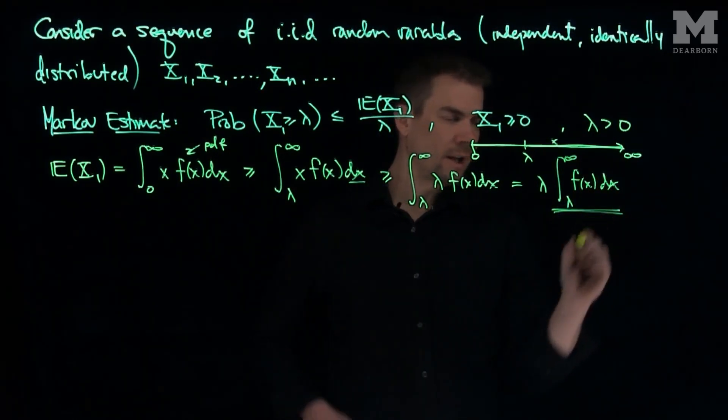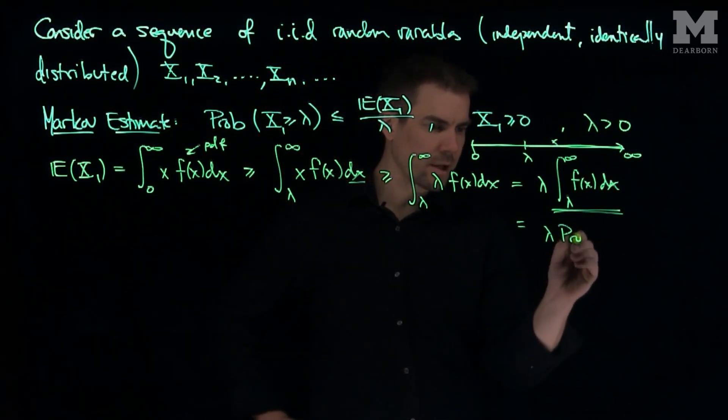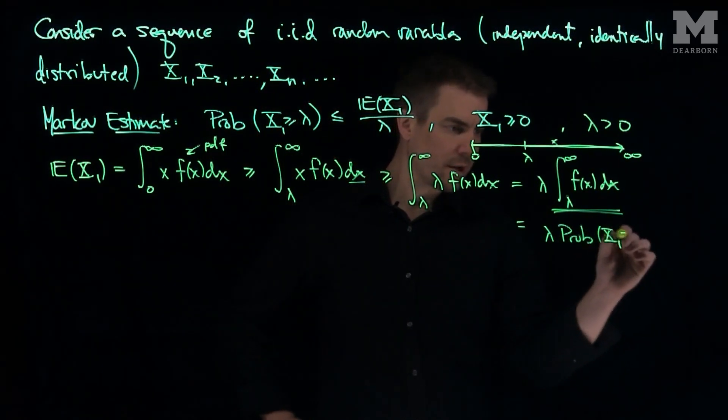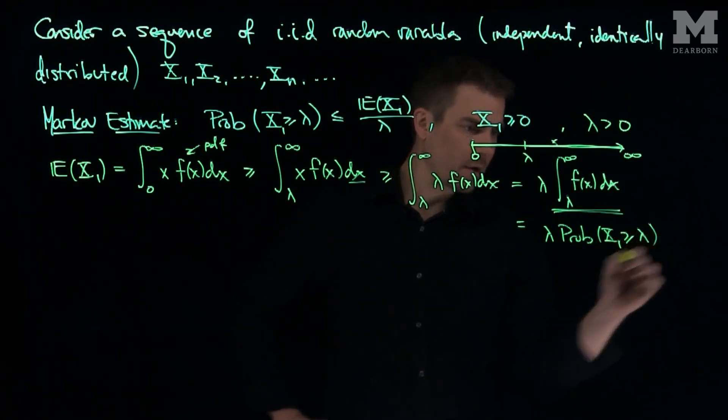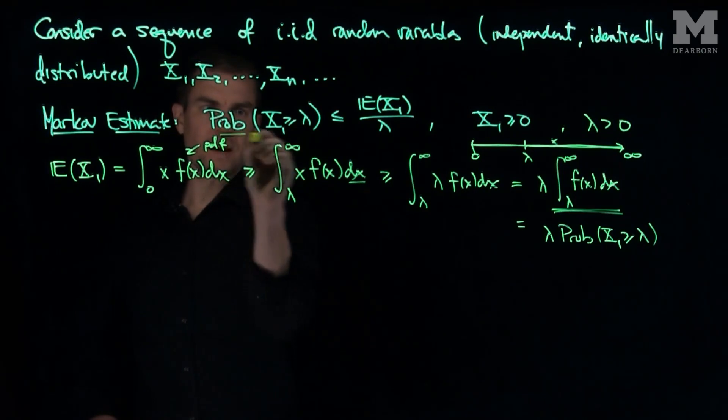And now this is just the probability that X is larger than lambda. So this is lambda times the probability that X1 is larger than or equal to lambda. And by dividing by lambda, we achieve the Markov estimate.